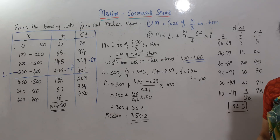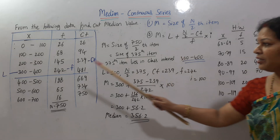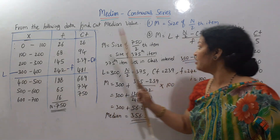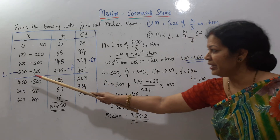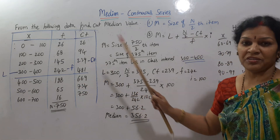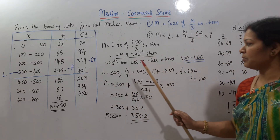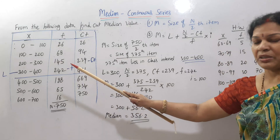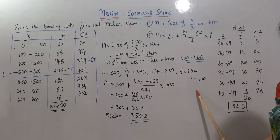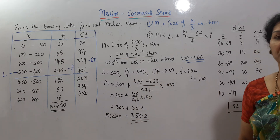And then, in the second formula, we identify values: L is 300, N/2 is 375. CF is the preceding cumulative frequency, which is 239. Frequency of the median class is 242. I is the class interval width, which is 100. Let's do the calculation — we get 356.2.